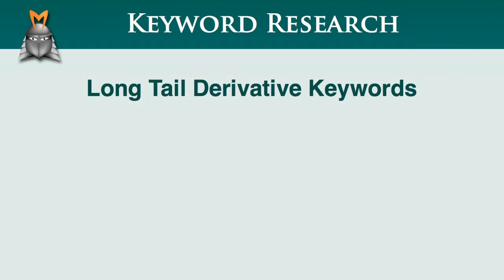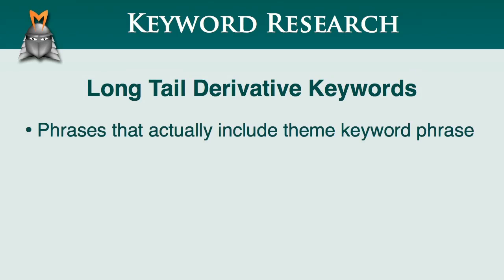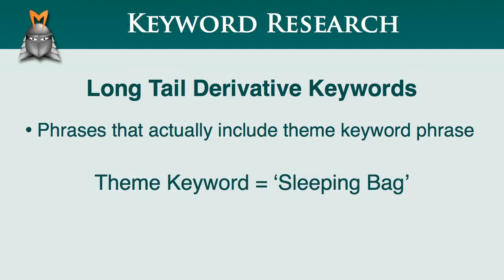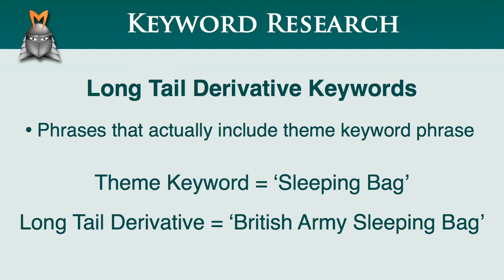Long-tail derivative keywords are those that actually include the theme keyword phrase. The easiest way to understand this is to look at an example. Let's say that your theme keyword was "sleeping bag." A long-tail derivative of this keyword might be "British Army sleeping bag."